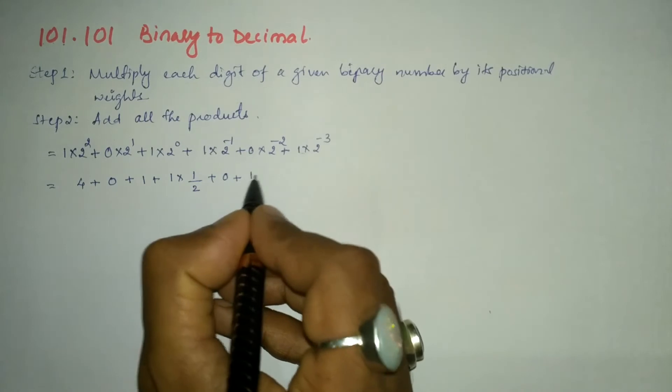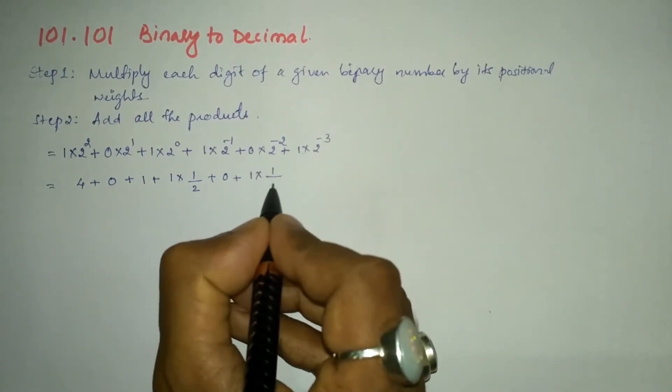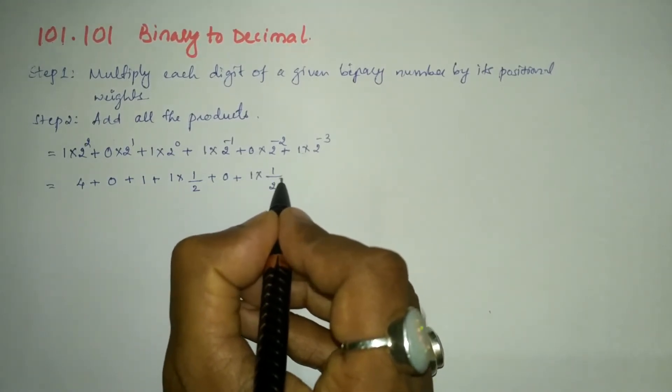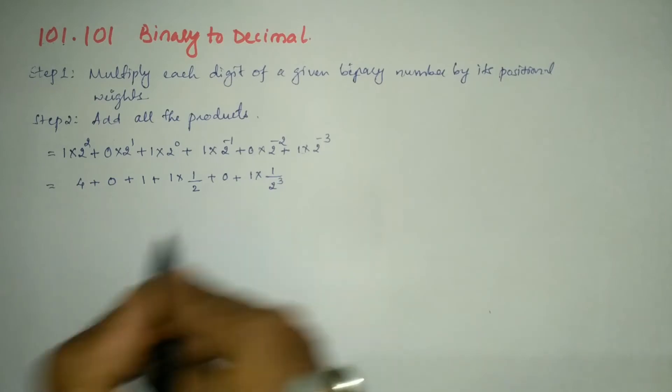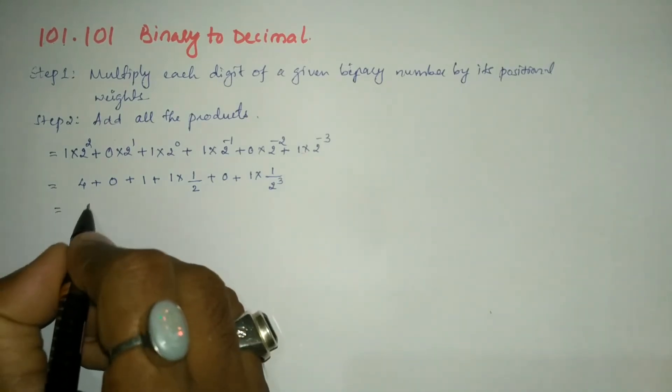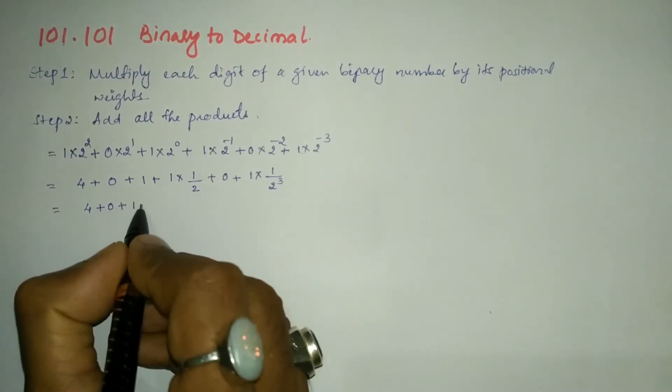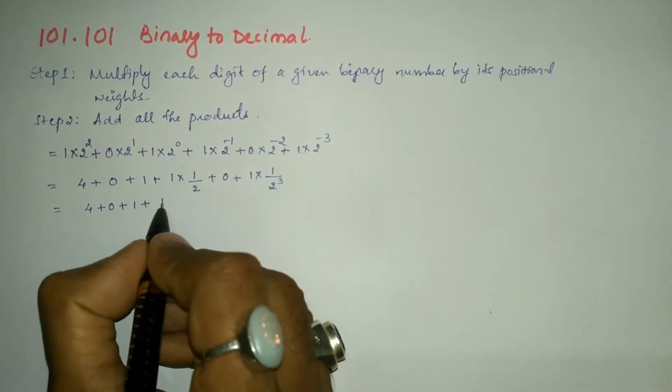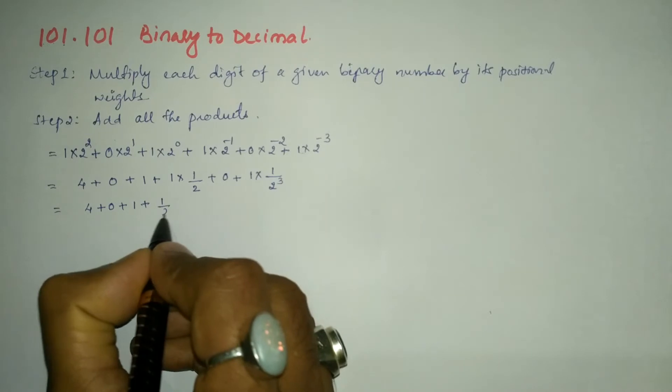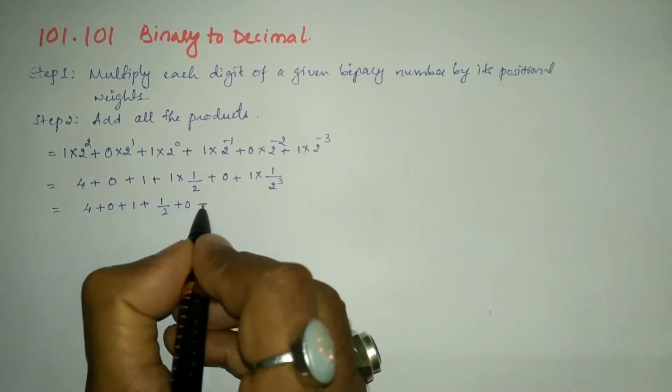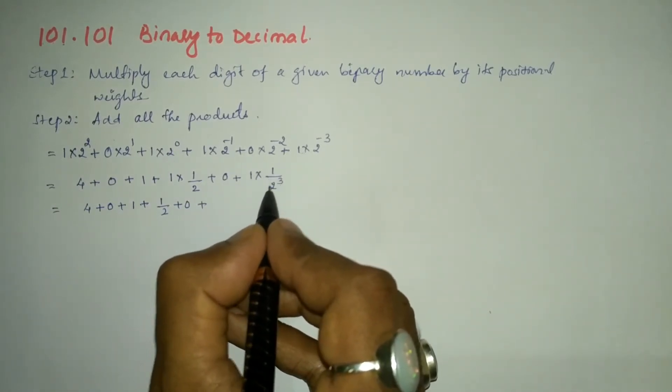Plus 0×anything will become 0. Plus similarly 1×2⁻³ can be written as 1 divided by 2³. Now let us further simplify: 4 + 0 + 1 + 1/2.